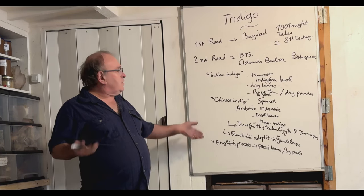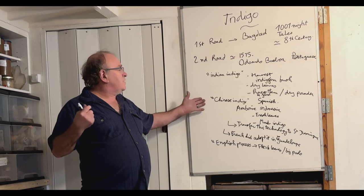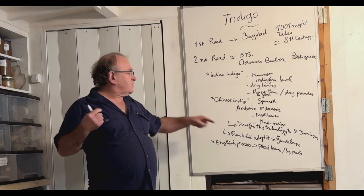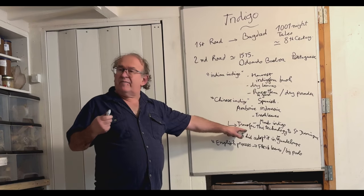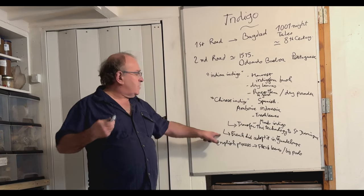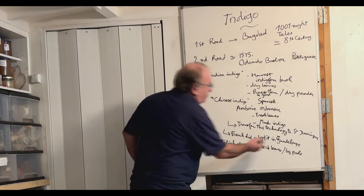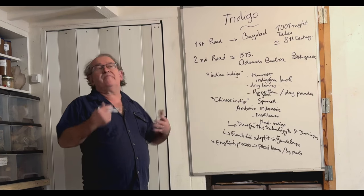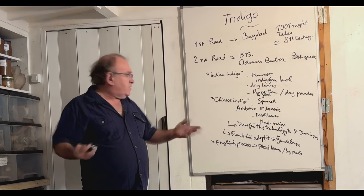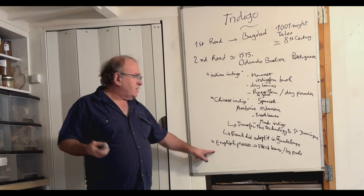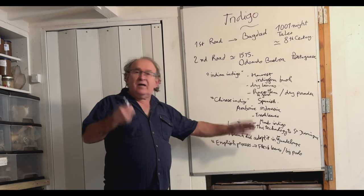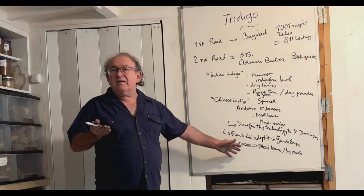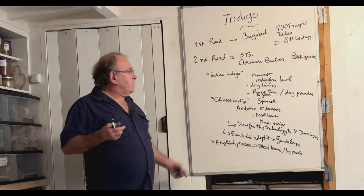But initially it was that Chinese indigo that the Spanish discovered in Indonesia, that was transferred to the islands of America, then catched by French, who did improve it and published lots of books to improve the quality. And then it was catched by English to come back to India and develop that style in Bengal. So that's a very crazy story.